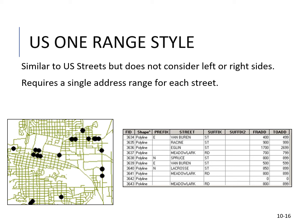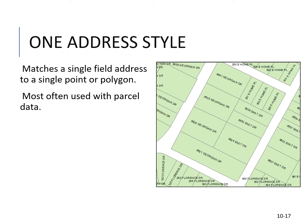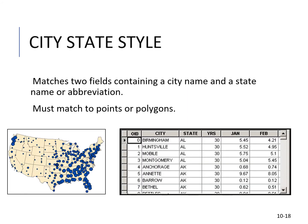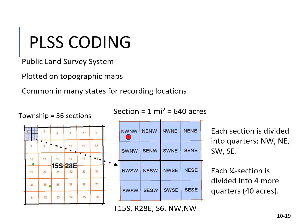The US One Range style is similar to US Streets but does not consider left or right sides — it requires a single address range for each street. The One Address style matches a single field address to a single point or polygon, most often used with partial data. The City-State style matches two fields containing a city name and a state name or abbreviation, matching to points or polygons.